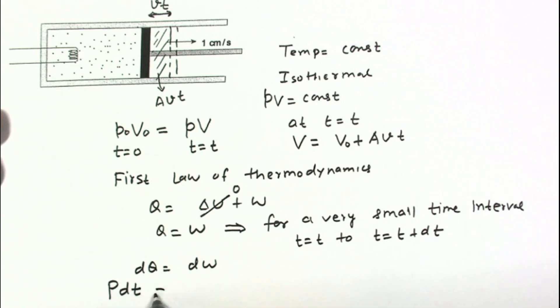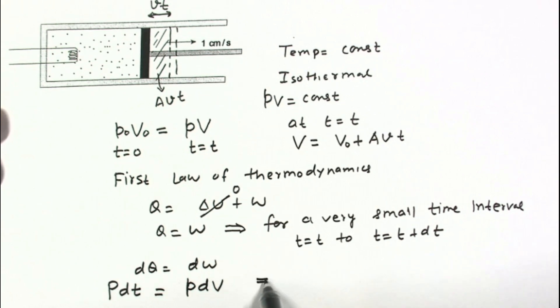And work done by the gas in this interval can be written as P dV. P is pressure at T equals T and dV is the change in volume, very small change in volume in this particular time interval dT.